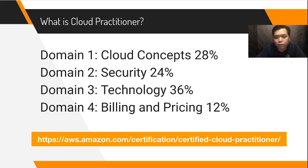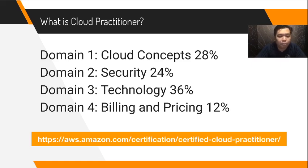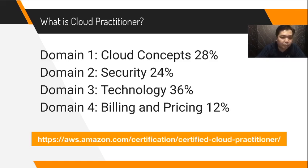Domain four is Billing and Pricing, at only 12 percent — the lowest percentage. It covers cost calculation, how to use AWS cost tools, support options, and managing your bill. However, feedback from users says this is where they get stuck most. Even though it's only 12 percent, one or two billing questions could really stump you.